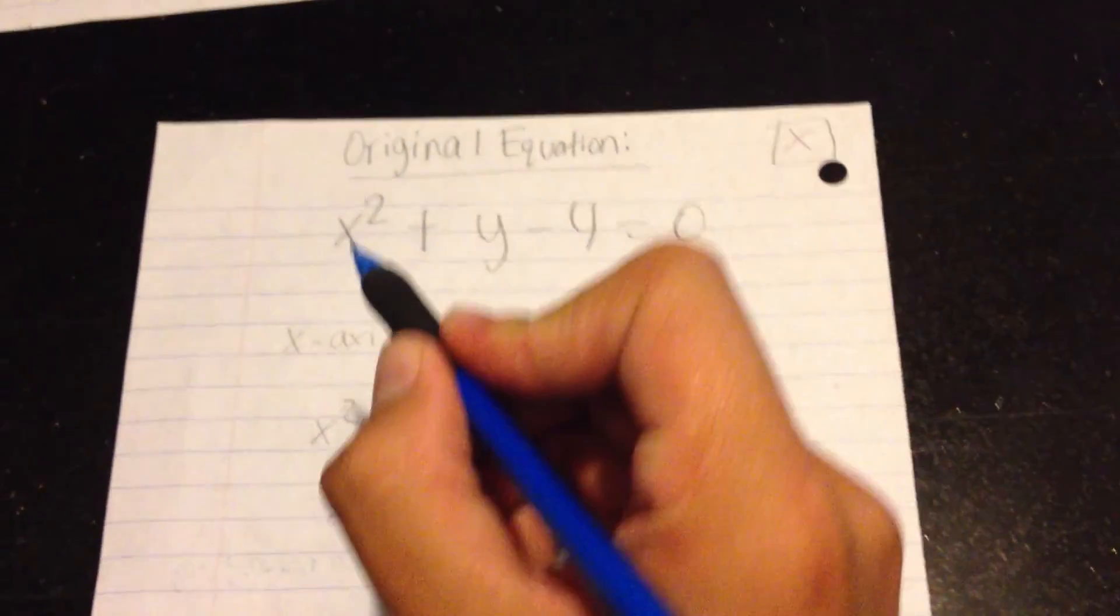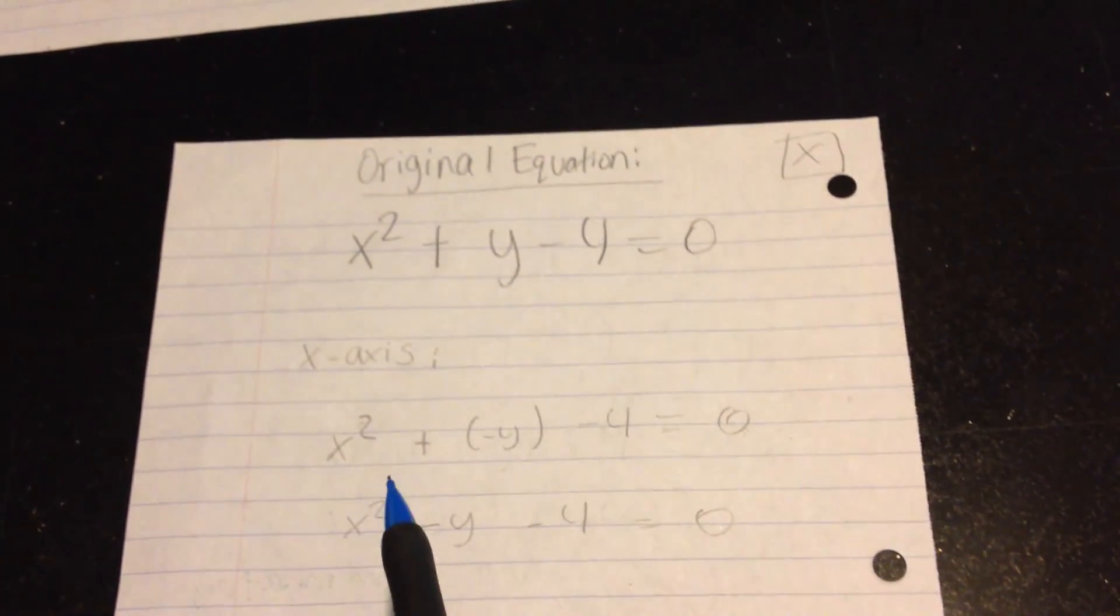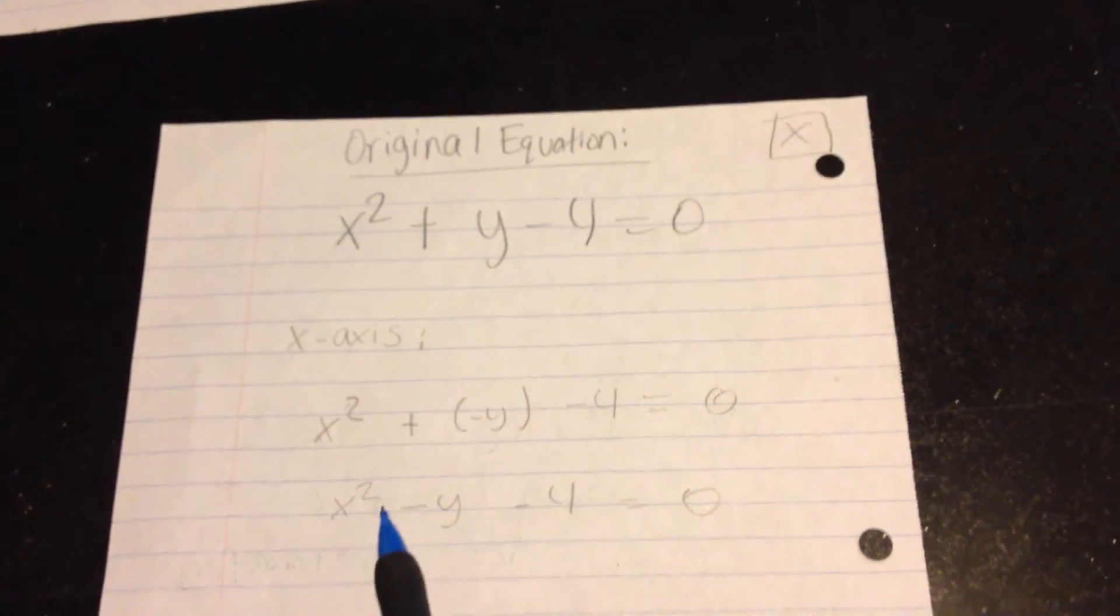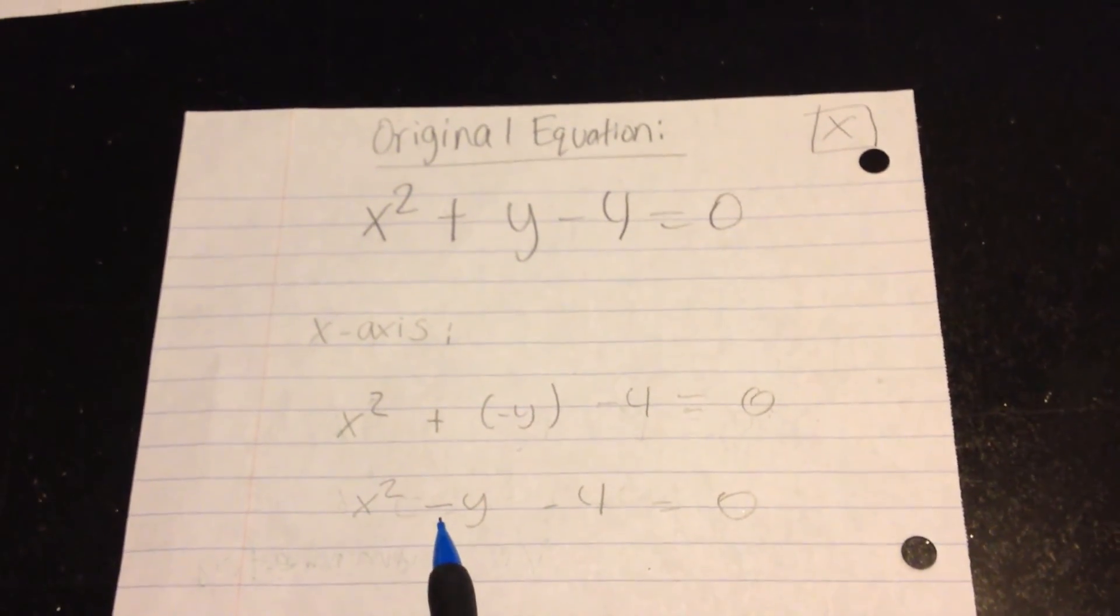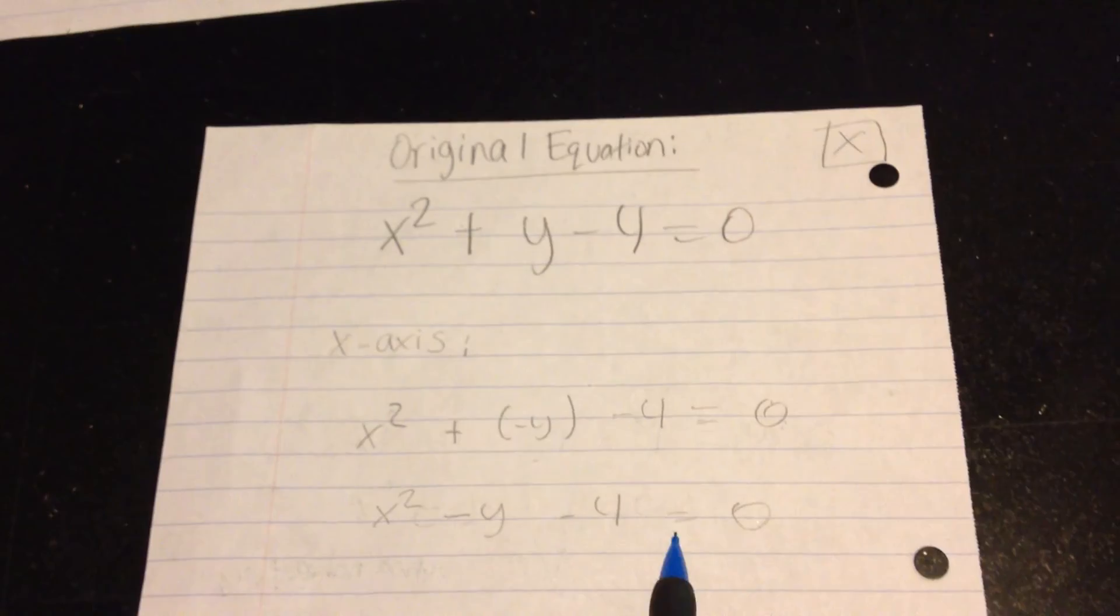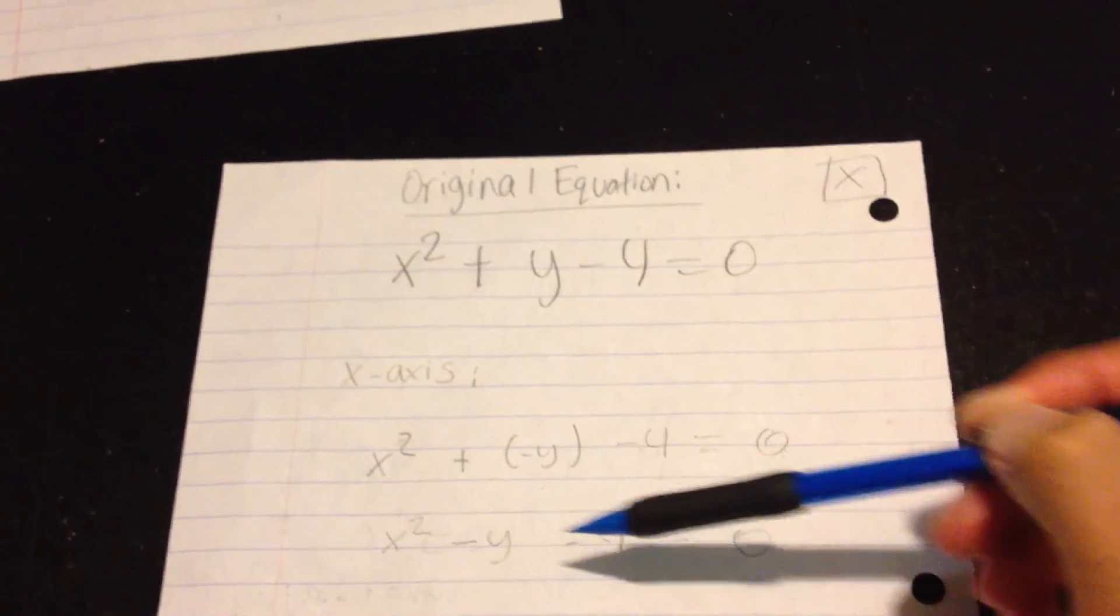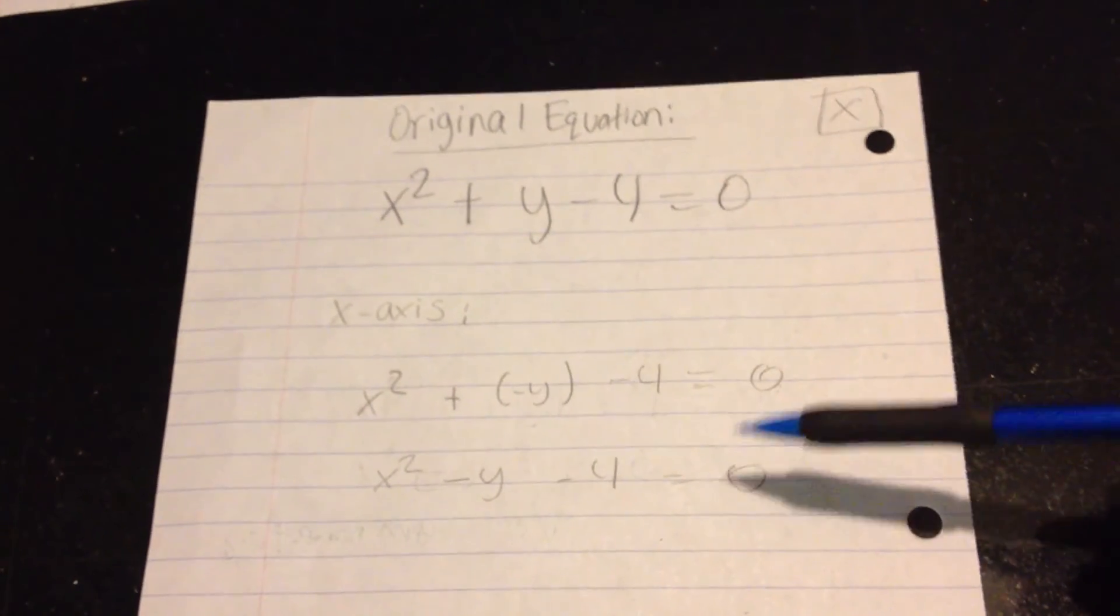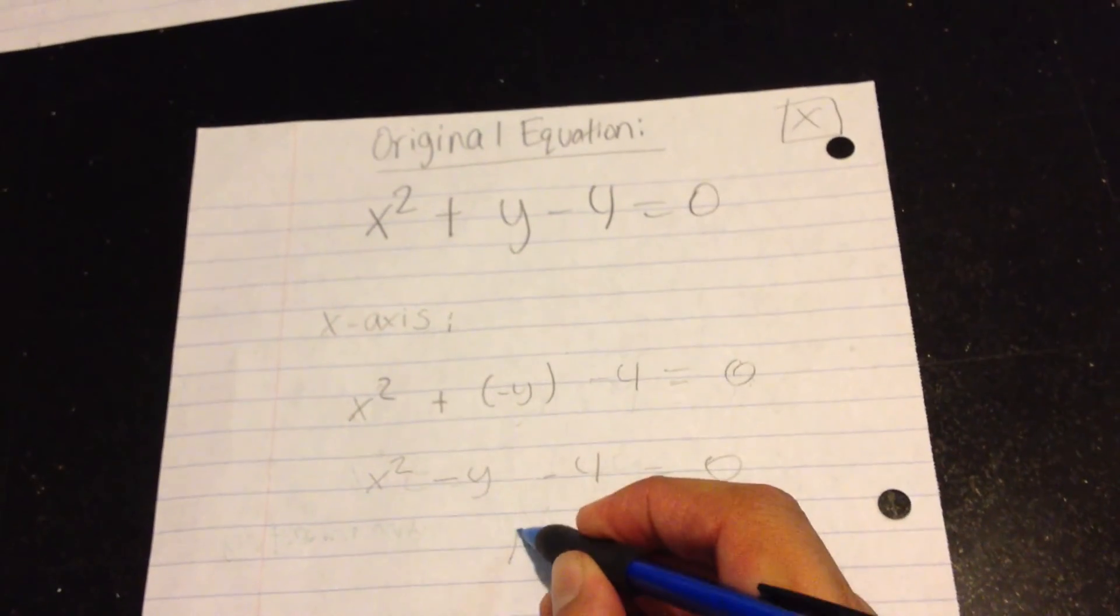So, looking at the original equation, we have x² + y - 4 = 0. In checking for the x-axis symmetry, we ended up with the equation x² - y - 4 = 0. So, right here, we had plus and a minus. These are not the same equation, even though they are close, so this means that we do not have x-axis symmetry. So, no. No x-axis symmetry.